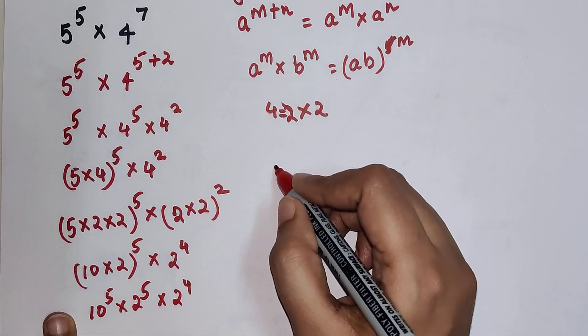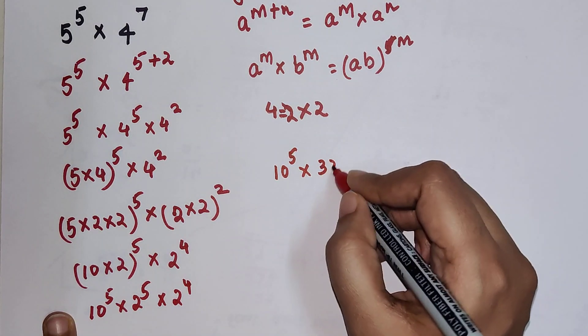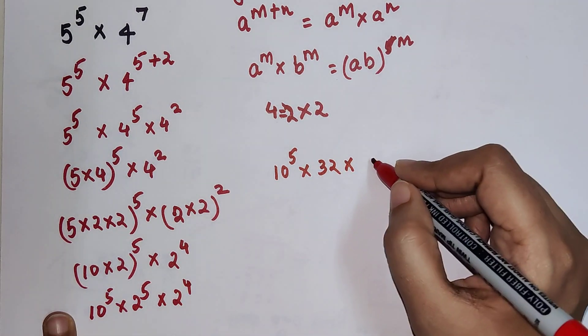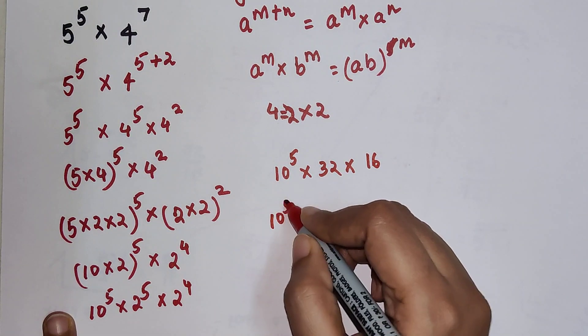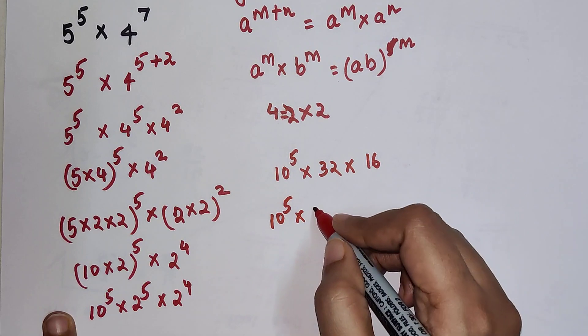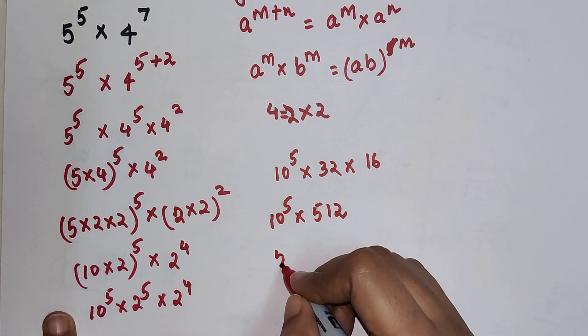So we have this as 10 raise to 5. 2 raise to 5 is 32 into 2 raise to 4 is 16. So we have 10 raise to 5, 32 into 16 gets you 512. So final answer is 512.